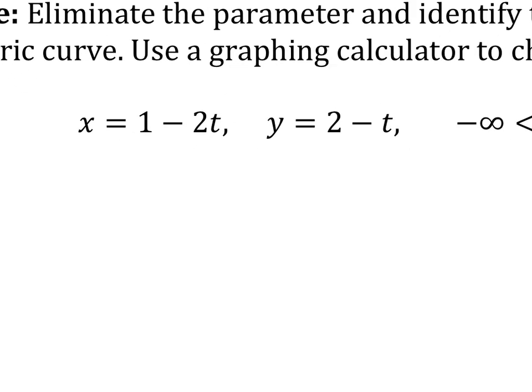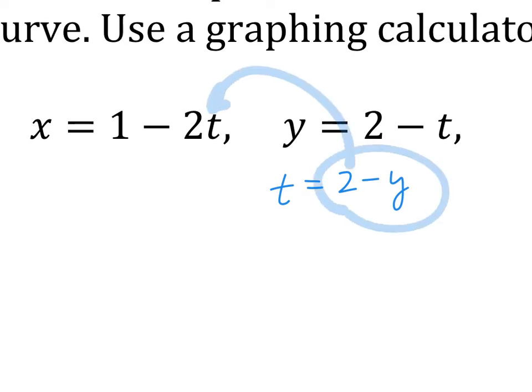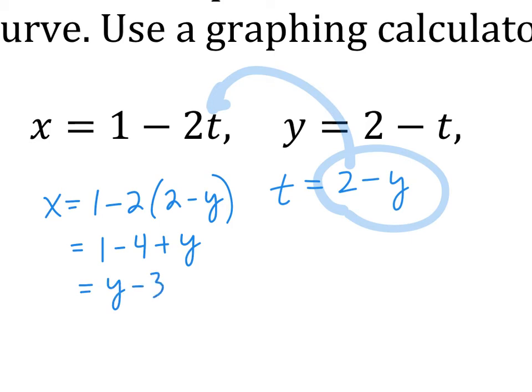Let's try another one — we want to eliminate the parameter. We don't want t. For y equals 2 minus t, subtract 2 and then multiply by negative 1, so t equals 2 minus y. Then substitute this into the x equation. So x equals 1 minus 2 times (2 minus y), which is 1 minus 4 plus 2y, giving x equals 2y minus 3.